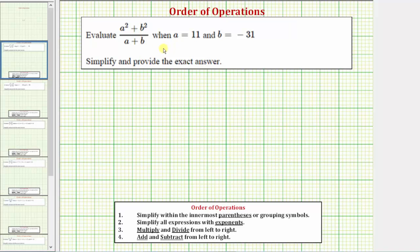We want to evaluate the given expression when a equals 11 and b equals negative 31. To do this, we'll substitute 11 for a and negative 31 for b, and then evaluate the expression using the order of operations.